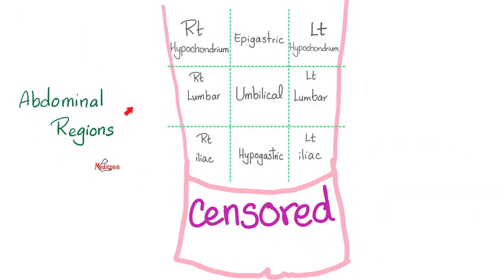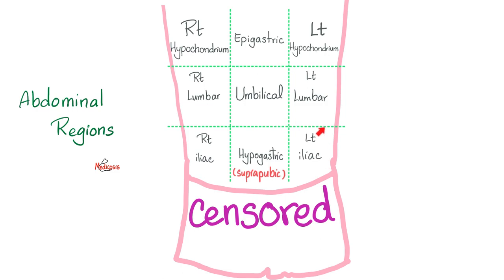Abdominal regions are nine. Right hypochondrium, epigastric, left hypochondrium, right lumbar, umbilical, left lumbar, right iliac, hypogastric, left iliac.